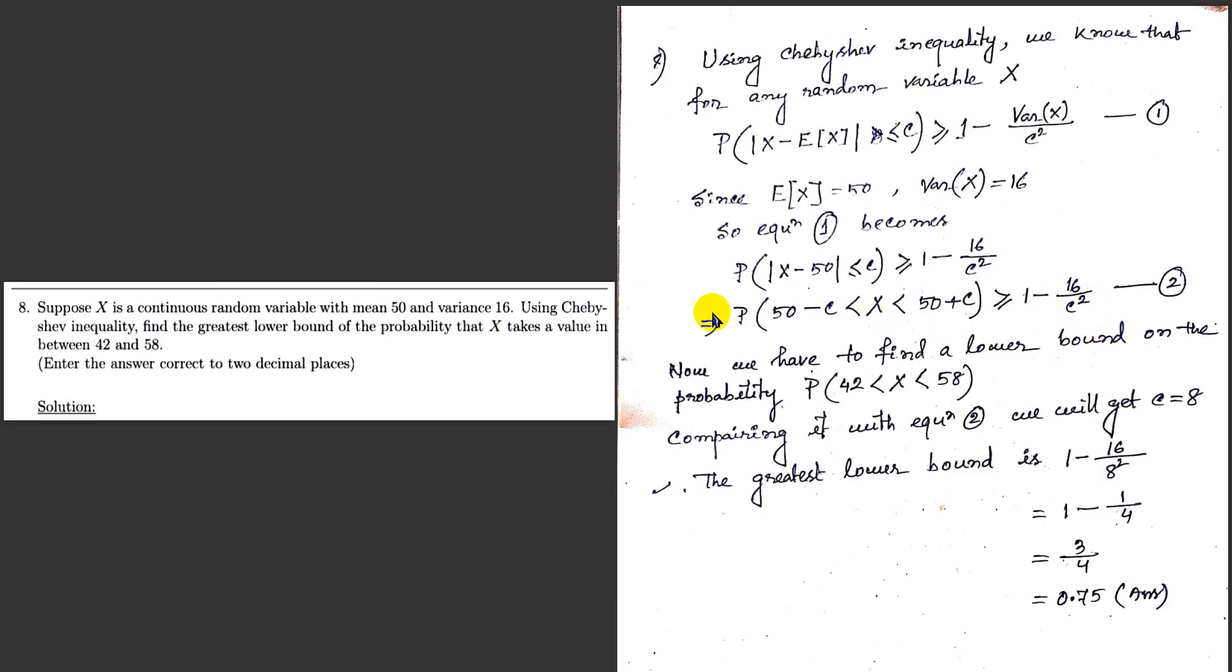Now we have to find the greatest lower bound of the probability that X takes a value between 42 and 58. So which is probability of 42 less than X less than 58.